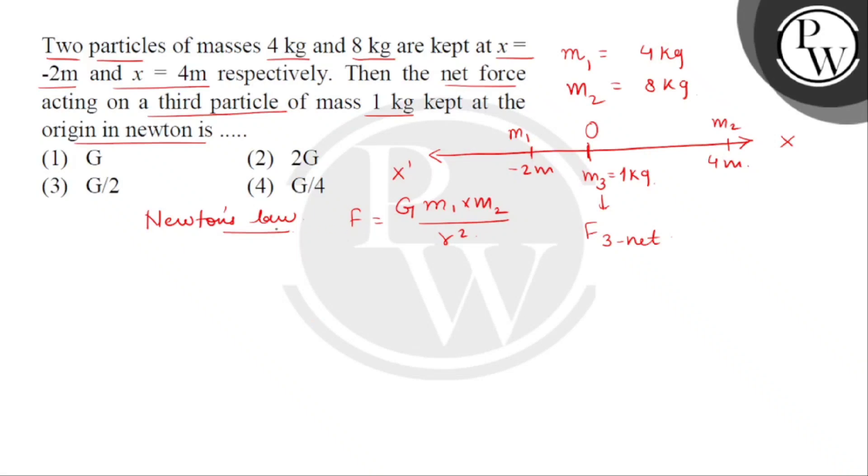First of all, we will see that the gravitational force is always attractive. M1 and M3 will attract each other. Similarly, M2 and M3 will attract each other. Let's denote this force as F31, the force on third particle by first particle in vector form, and let this be F32, force on third particle by second particle.